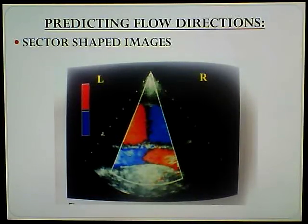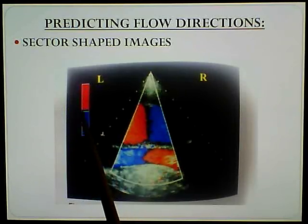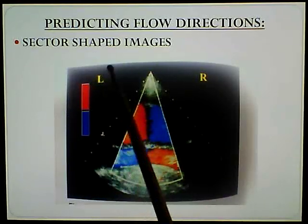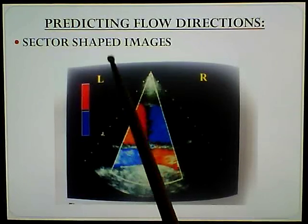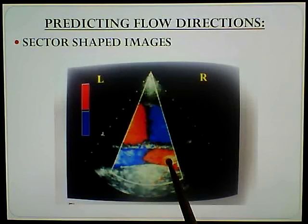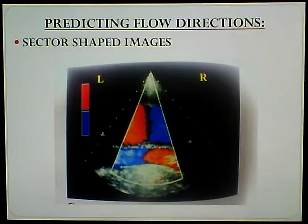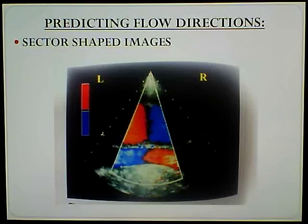The direction of flow in this vessel is left to right. Start with the towards. Let's do the bottom - the same principle applies. We look at the color map: red, blue, towards, away, left of the screen, right of the screen. This is constant. Towards and away is a constant. The colors may change, but above the line is towards, below the line is away. We're doing the bottom vessel - put our finger on the towards, slide it to the away. The bottom vessel is now flowing right to left. This is constant for any time you see a sector-shaped image.